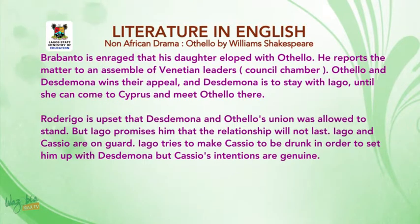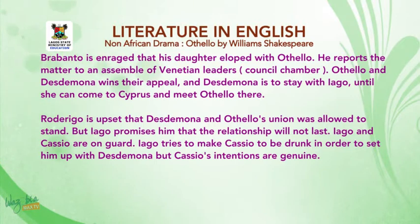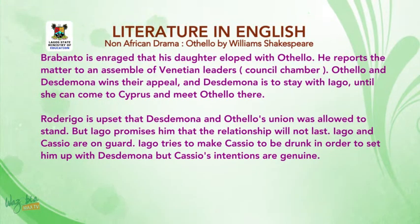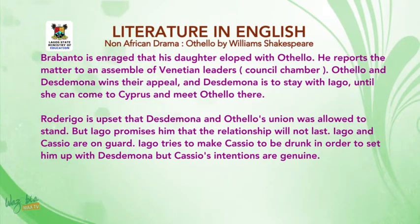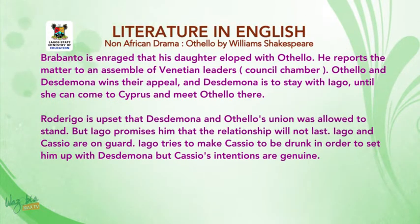Brabantio is enraged that his daughter eloped with Othello. He reports the matter to an assembly of Venetian leaders, that is the council chambers. Othello and Desdemona win their appeal, and Desdemona is to stay with Iago until she can come to Cyprus and meet Othello there. Rodrigo is upset that Desdemona and Othello's union was allowed to stand, but Iago promises him that the relationship will not last.